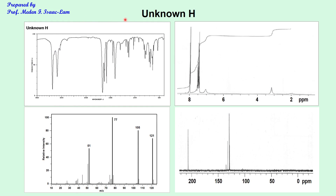This is an example of an unknown that will be assigned for each student. There are going to be four different spectral data provided. The first one is the IR spectrum. You should be able to distinguish it because it is percent transmittance versus wavenumber, going from 4,000 to 400 per centimeter.